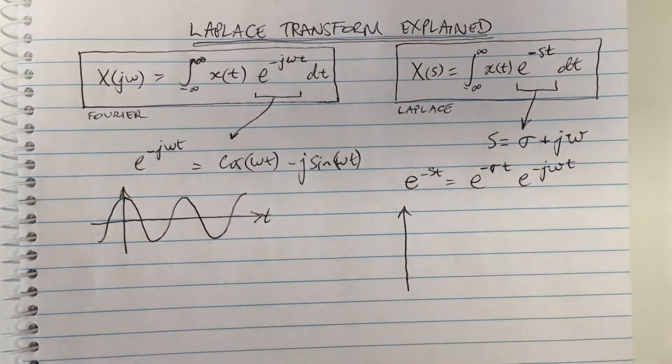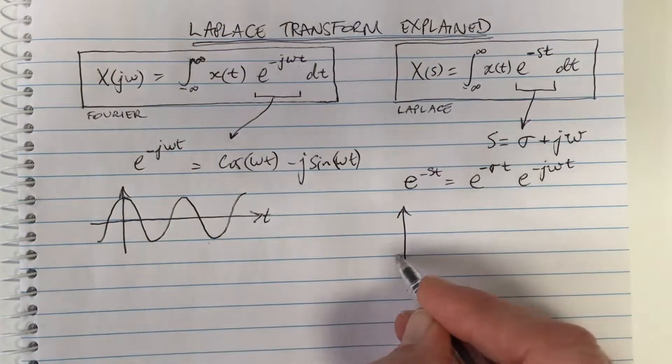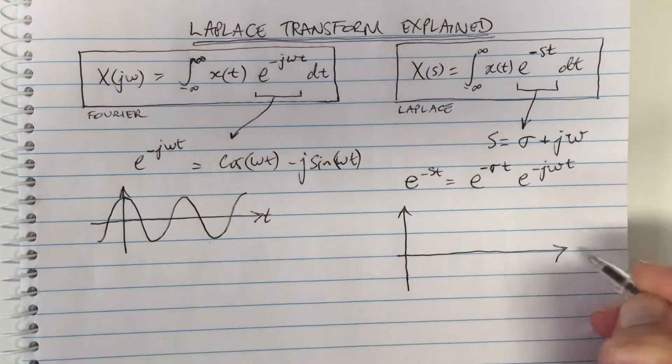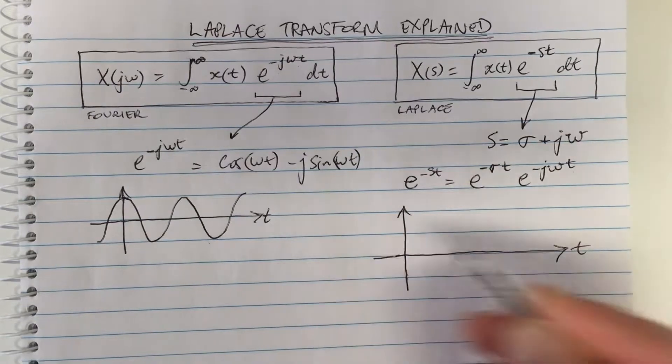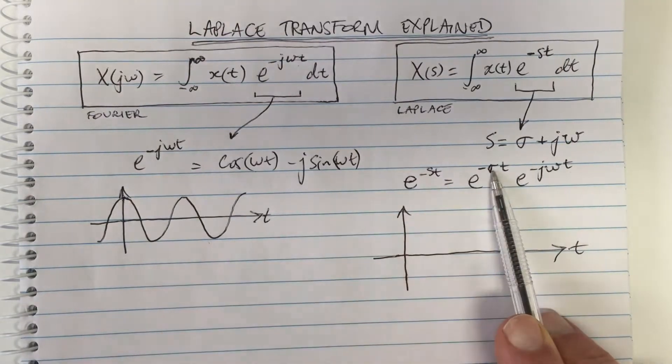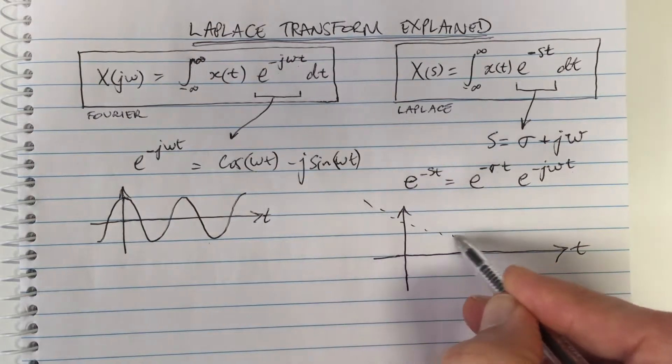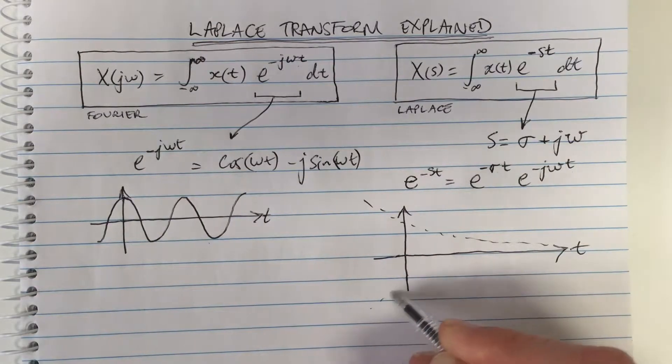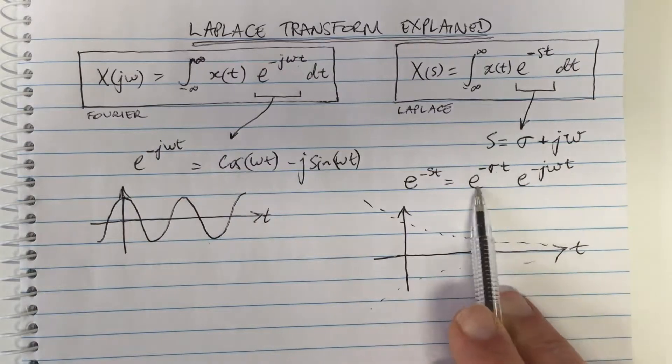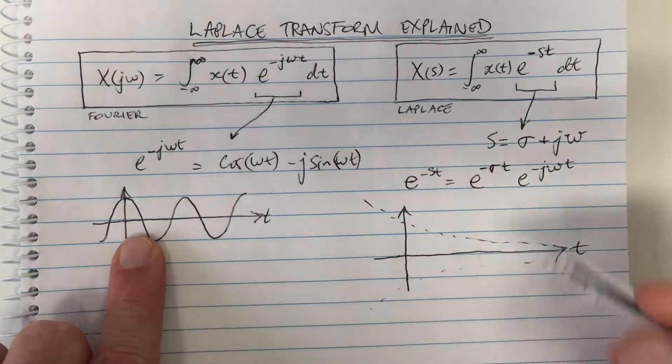Let's draw some of them. It's always good to look and think and draw what the functions might be. If σ is positive, then this is a negative exponential. A negative exponential looks like this, and it's a negative exponential multiplied by this waveform.